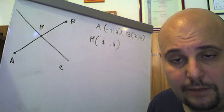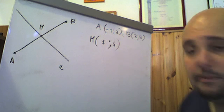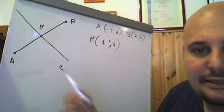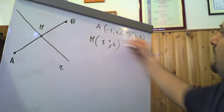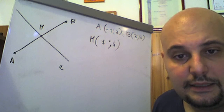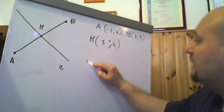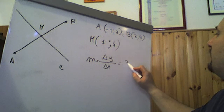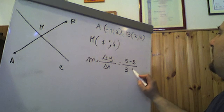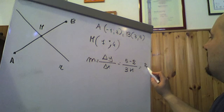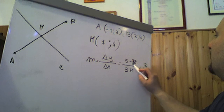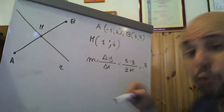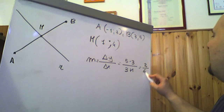La retta passa per il punto M di coordinate (1, 4). Usiamo l'equazione del fascio improprio. Calcoliamo il coefficiente angolare M della retta contenente il segmento AB: M = ΔY/ΔX = (5-3)/(3-(-1)) = 2/4 = 1/2. Quindi M di AB è 1/2.